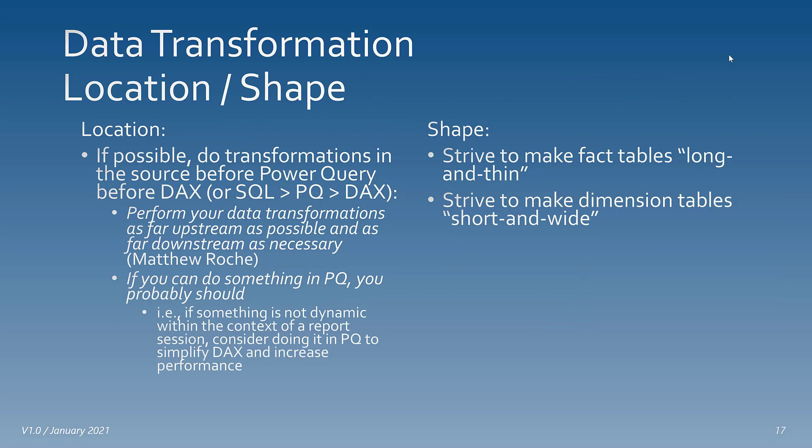The next thing is the location where transformations should be done. The best place is in the source. If you can't do it in the source, do it in Power Query. If you can't do it in Power Query, then do it in DAX. A nice way to put this: perform your data transformations as far upstream as possible and as far downstream as necessary. If something isn't dynamic within the context of a report session, consider doing it in Power Query to simplify your DAX and increase report performance. As for the shape of your tables: strive to make fact tables long and thin, and dimension tables short and wide.